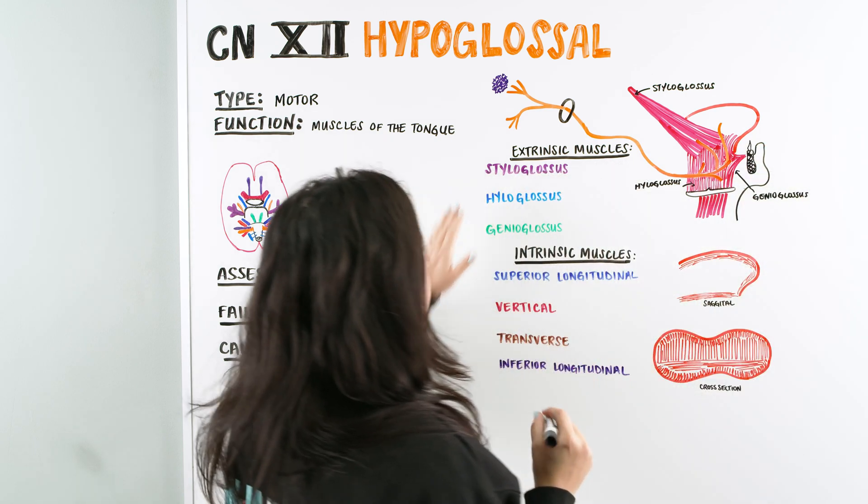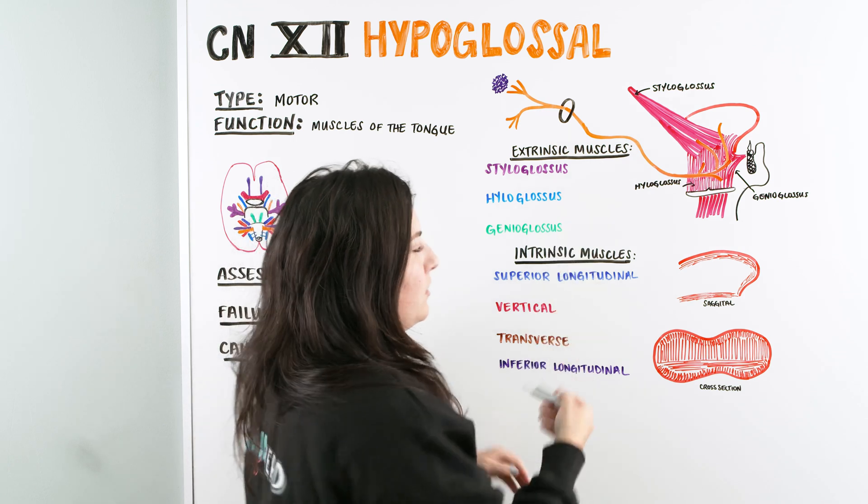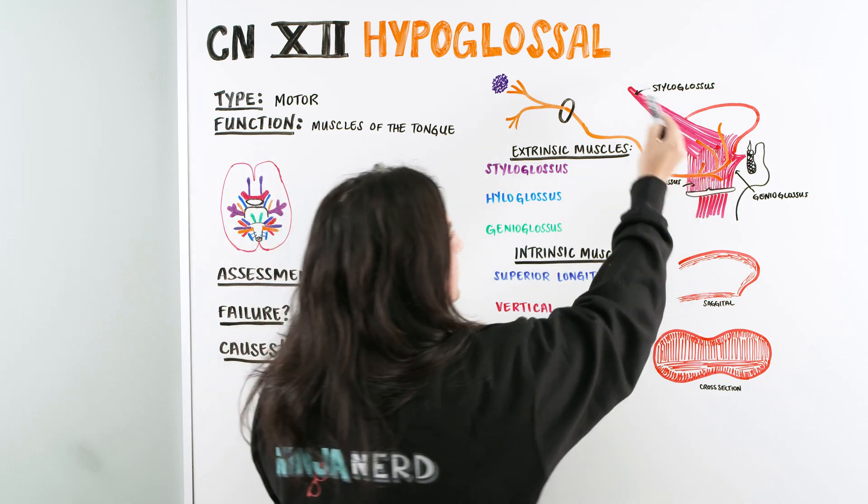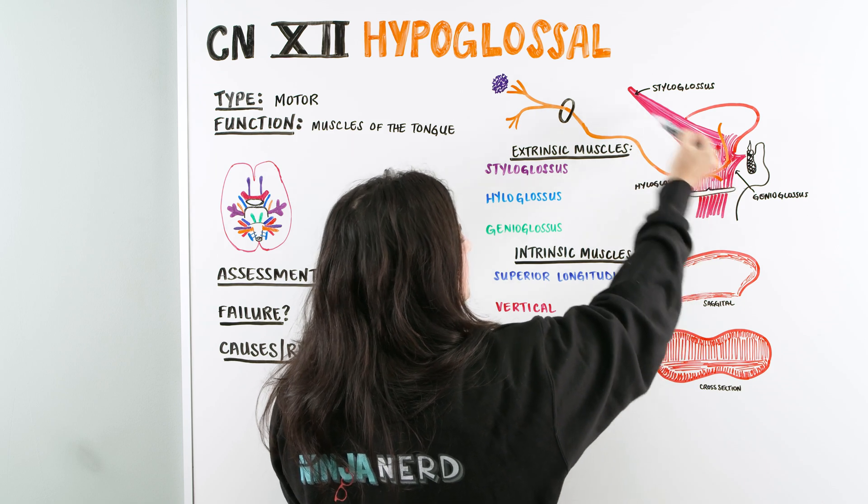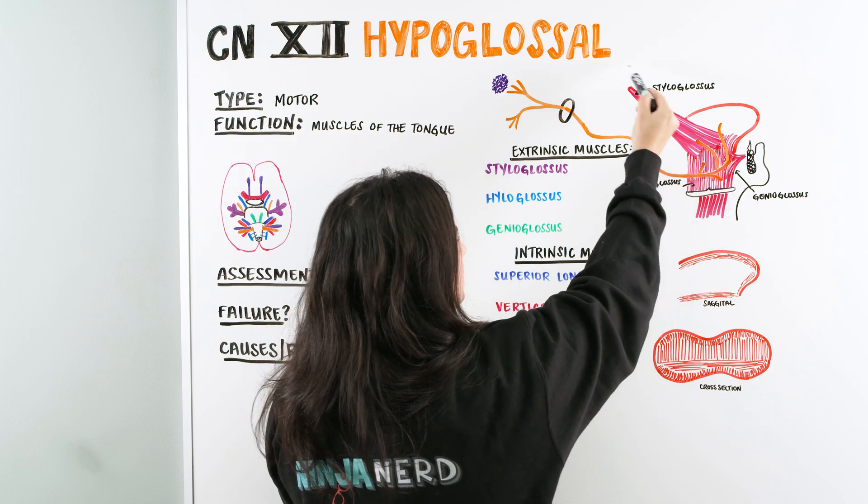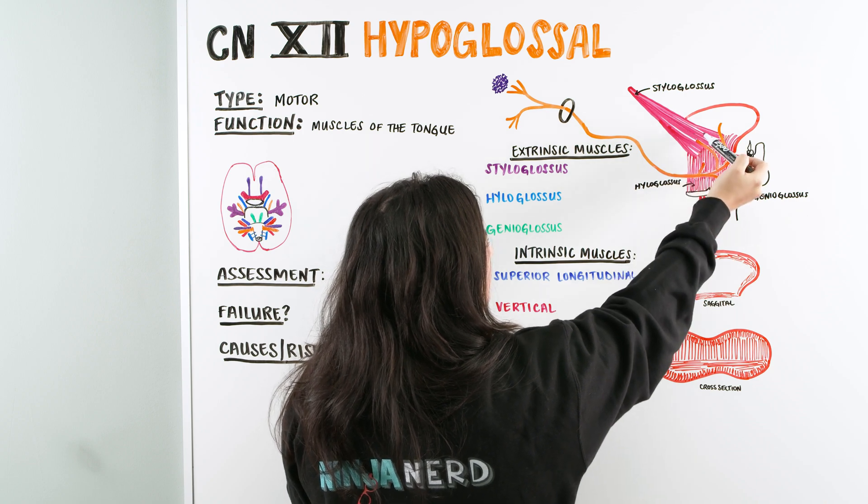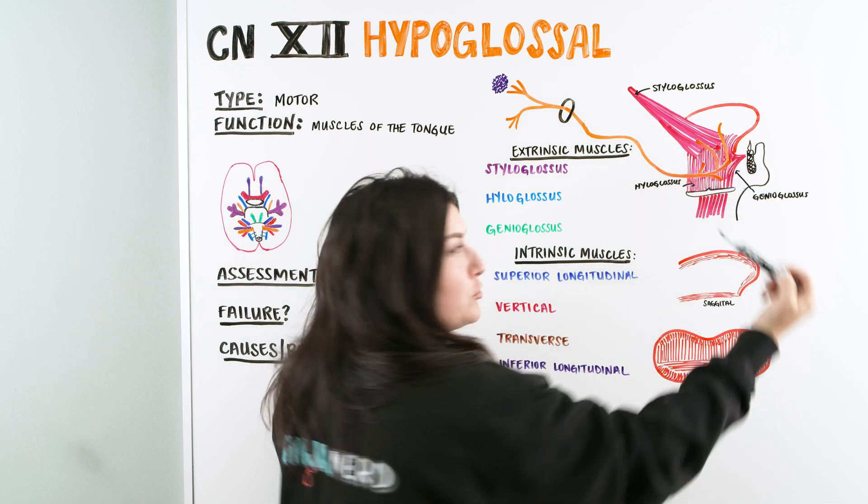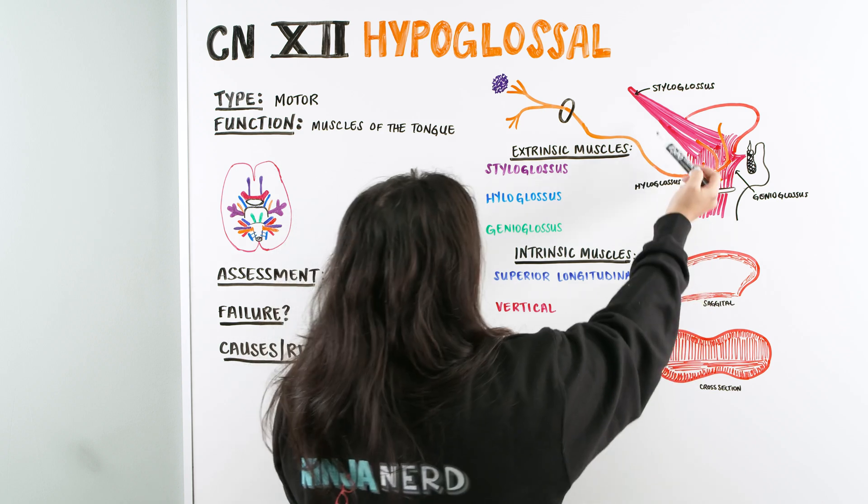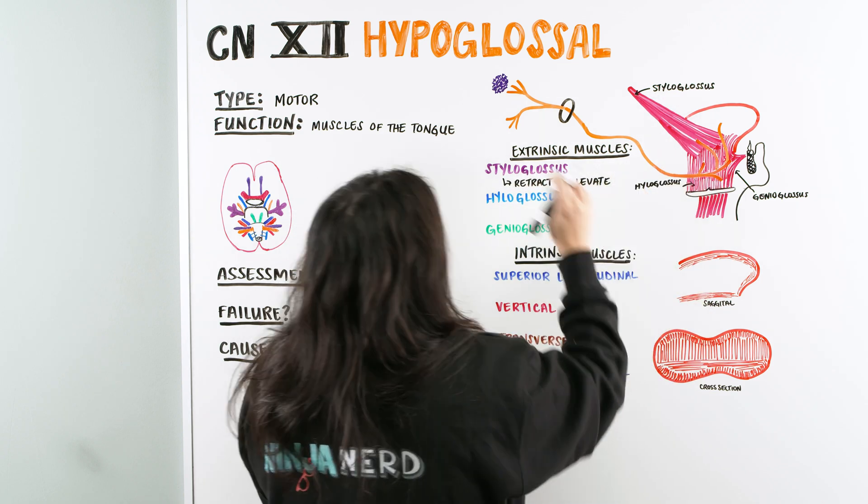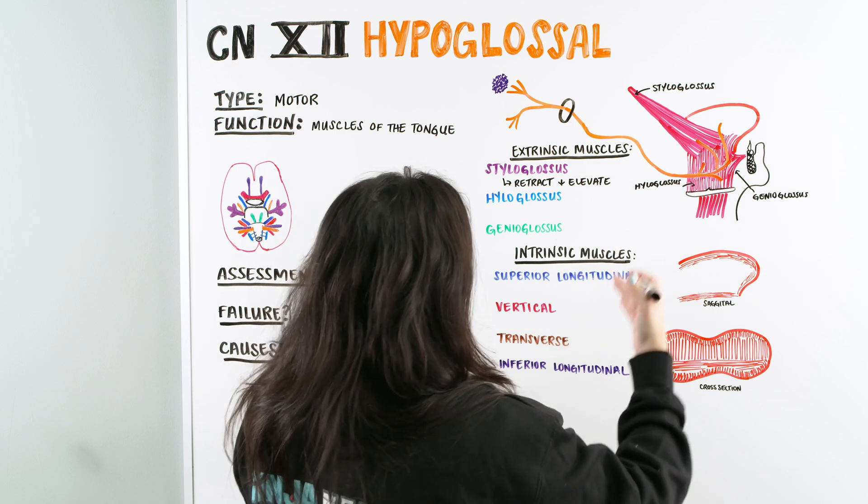So these extrinsic muscles have some important functions that work with the hypoglossal, or the nerve, hypoglossal nerve helps control. So we have the styloglossus here, we can see that it's kind of this muscle that's pulled up and back, and actually connects to our styloid process. But what we can see is, if this muscle were to contract, it's going to pull this tongue back, so it's going to retract the tongue, and it's also going to elevate it a little bit. So the styloglossus is going to retract and elevate the tongue.